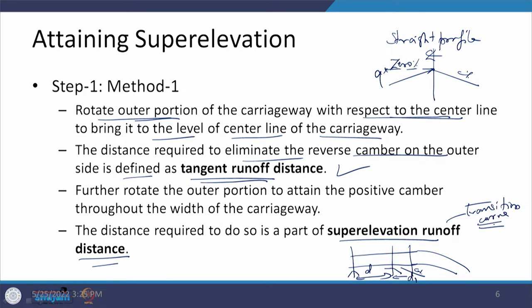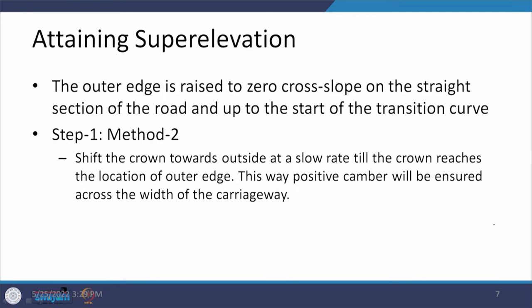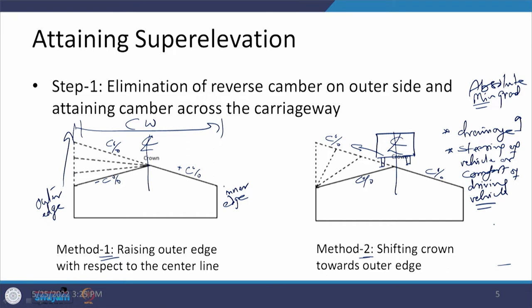The pavement is then further rotated over a distance d1 until C percent camber is achieved uniformly across the full width of the carriageway. This distance d1 is part of the superelevation runoff distance, which is associated with the transition curve. So the tangent runoff distance d is on the straight section, and the superelevation runoff distance d1 is on the transition curve section.